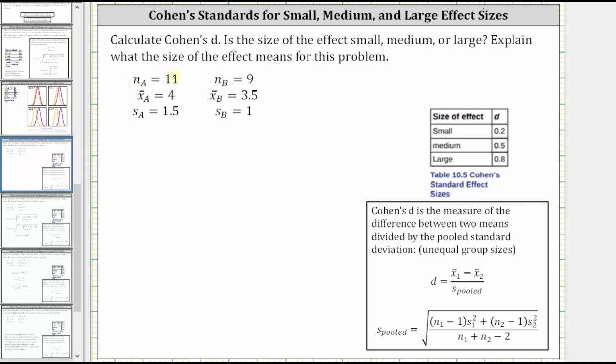Here we have some data from our previous problem, where we have one sample where the sample size is 11, the sample mean is 4, and the sample standard deviation is 1.5. For the second sample, the sample size is 9, the sample mean is 3.5, and the sample standard deviation is 1.